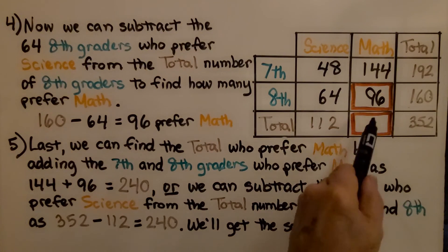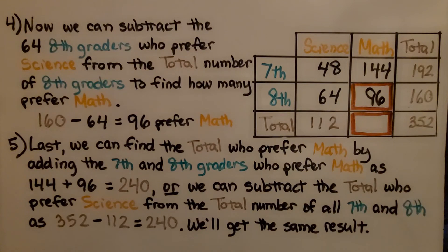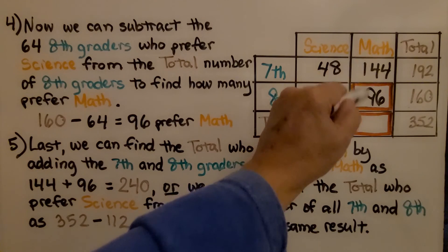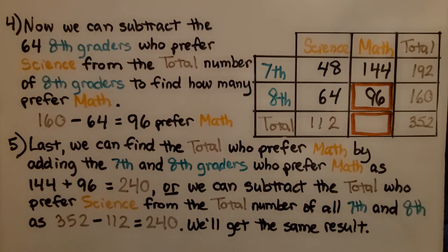Last, we can find the total who prefer math by adding the 7th and 8th graders who prefer math. 144 plus 96, which is equal to 240.